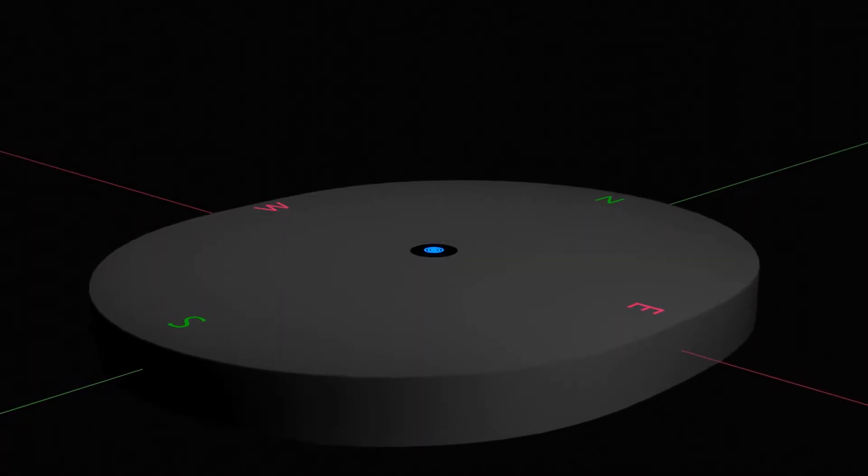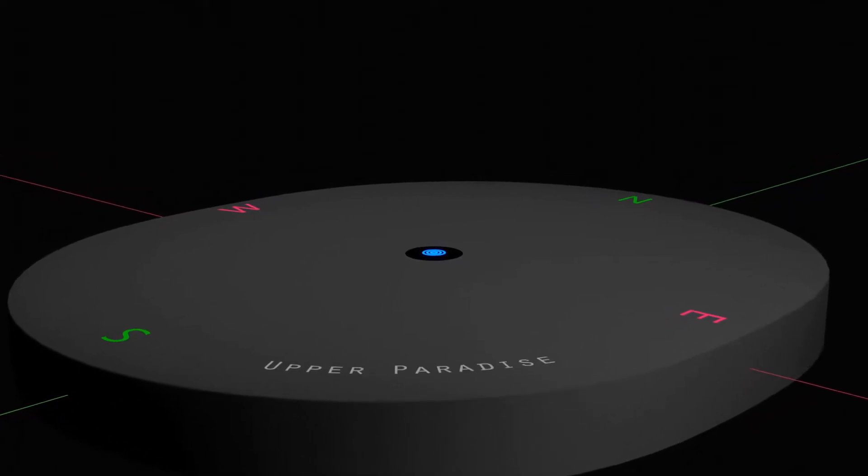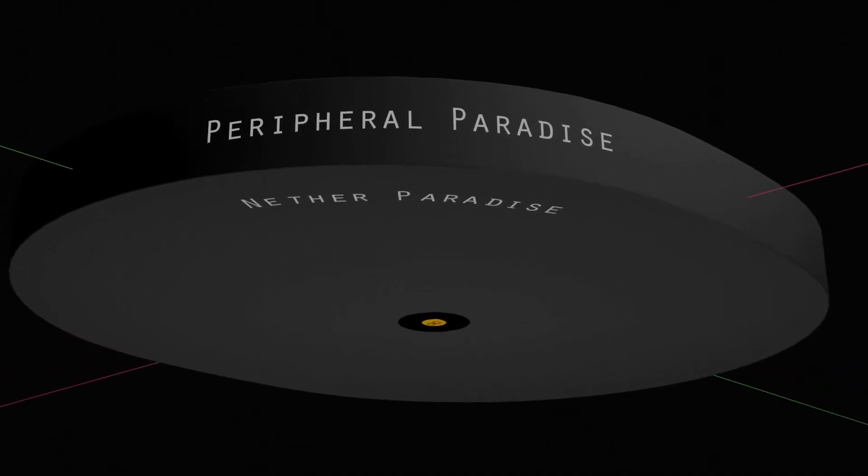The central isle is geographically divided into three domains of activity: Upper Paradise, Peripheral Paradise, and Nether Paradise.